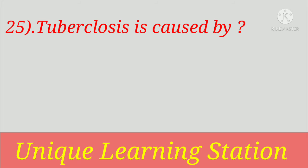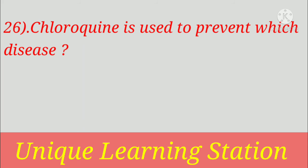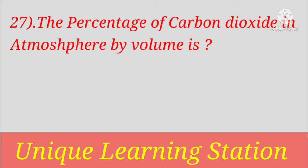Tuberculosis is caused by? Answer: Mycobacterium tuberculosis. Chloroquine is used to prevent which disease? Answer: malaria. The percentage of carbon dioxide in the atmosphere by volume is? Answer: 0.03%.